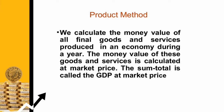In the product method, national income is measured as a flow of goods and services. We calculate the money value of all final goods and services produced in an economy during a year. Final goods refer to those goods which are directly consumed and not used in a further production process. Goods which are further used in the production process are called intermediate goods. In the value of final goods, the value of intermediate goods is already included.